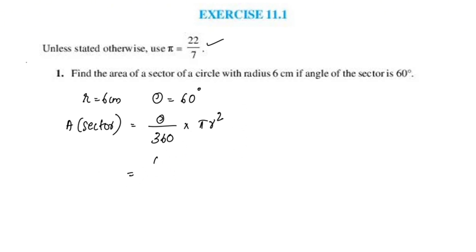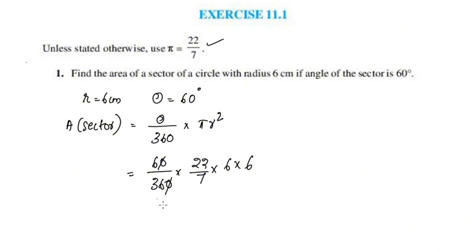Area is equal to theta — 60 by 360 — into pi, which is 22 by 7. Radius is 6, so r squared is 6 into 6. Once you do this, cancel: 6 and 6 give 36, and 36 cancels further. 22 into 6 is 132 by 7, giving 132 by 7 cm².